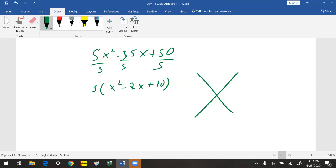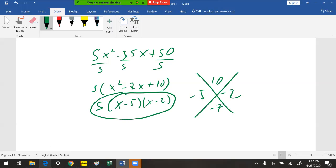When we do the magic x, two numbers multiplied by 10, add to negative 7. It's negative 5, negative 2. So I'm left with 5 on the outside, x minus 5, x minus 2. We did it. Not difficult there. Understand how to do the magic x.